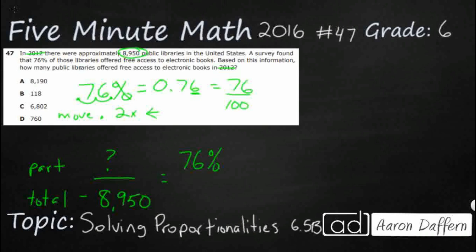So, 76% is equal to 0.76 is equal to 76 hundredths. That's going to be important for us. Let's just make this 76 hundredths. 76% is the same as 76 hundredths.